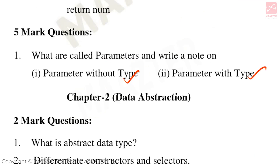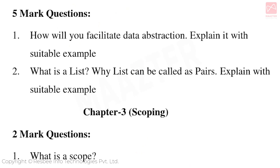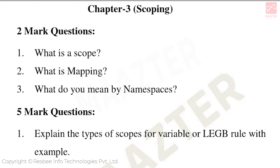Chapter 2: Data Abstraction. Important 2-mark questions: What is abstract data type? Differentiate constructor and selectors. Important 5-mark questions: How will you facilitate data abstraction? Explain it with a suitable example. What is a list? Why can a list be called as pairs? Explain with a suitable example.